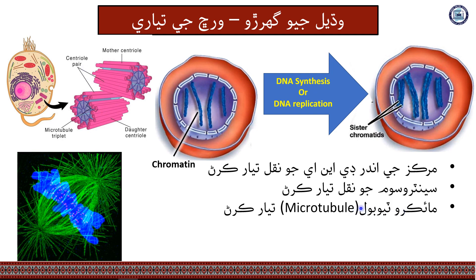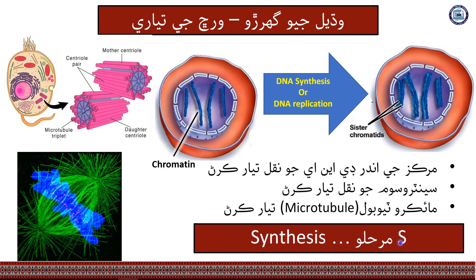These structures — the centrioles — are used in forming microtubules at the central spindle. Then the cell moves into the S phase, or Synthesis phase.